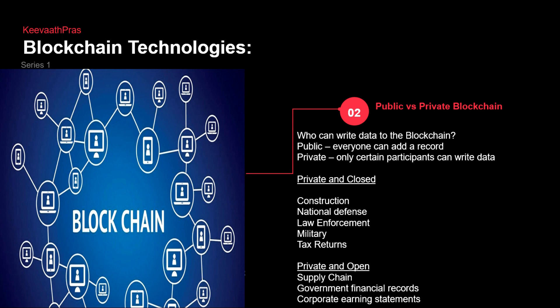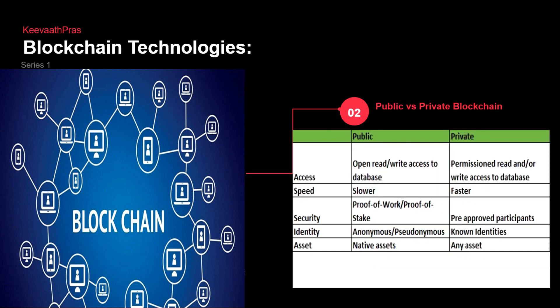Private-and-closed covers law enforcement, military, and tax returns. Private-and-open involves only a few people but is open in some way — like supply chain, government financial records, and corporate earnings statements. The corporate sector is basically private, but when they announce their results it becomes private-and-open. Public versus private is essentially about who has the access.